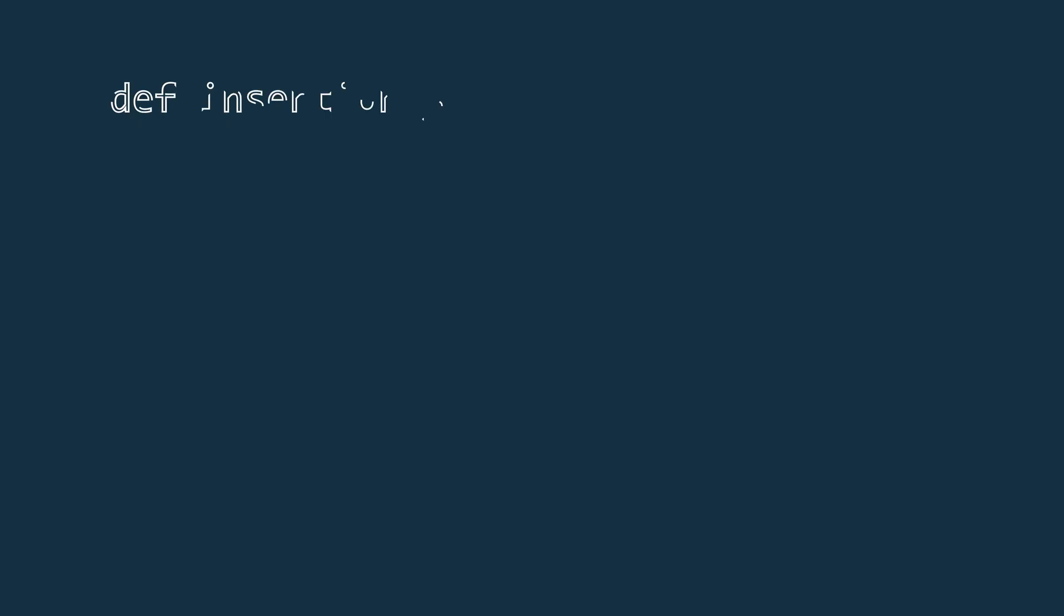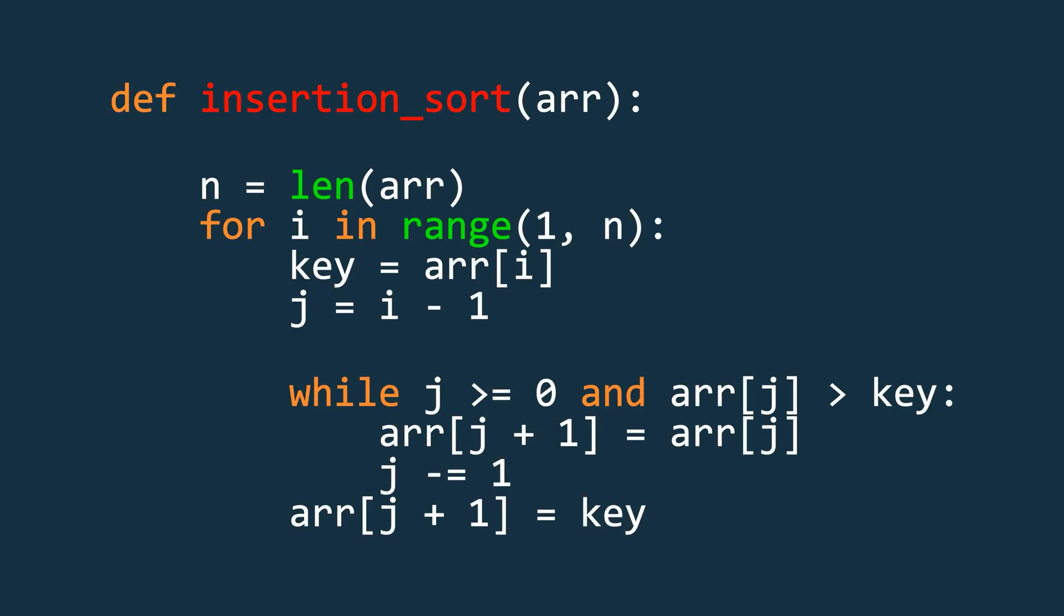Now let's see the code for this. First define the function that takes the array as input. Then store the length of the array in a variable. After that, run a loop from index 1 to the last index.